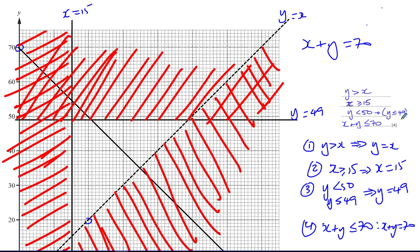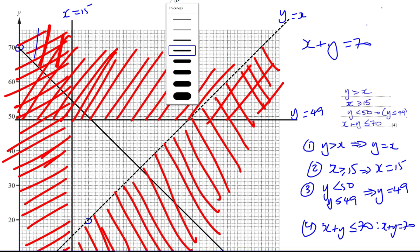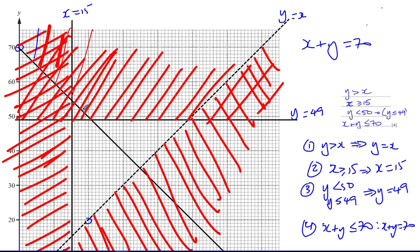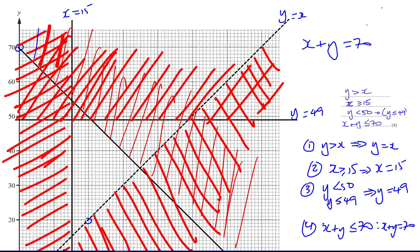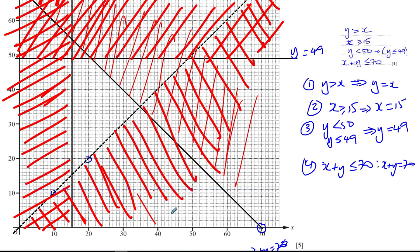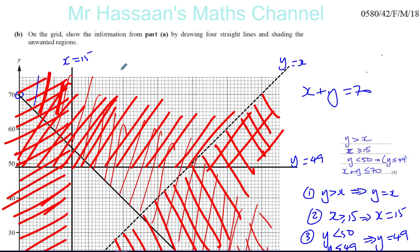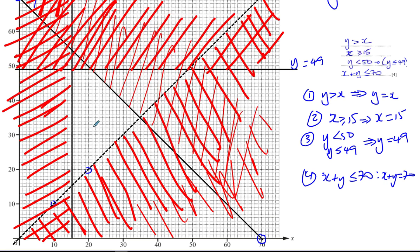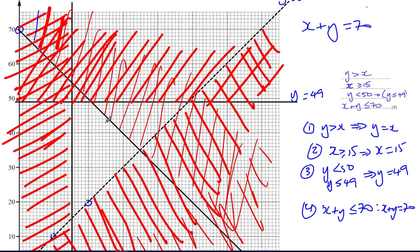Finally, X + Y ≤ 70 — that's the line X + Y = 70. We want what's below it, so we shade what's above. Now basically everything is shaded except for one region — a quadrilateral, which makes sense because there are four boundaries. That's the region that satisfies all the inequalities; it's left unshaded. I'll go on to part C of the question in the next video.